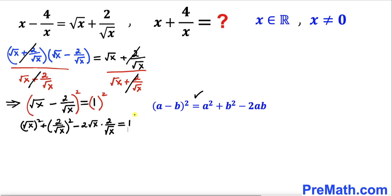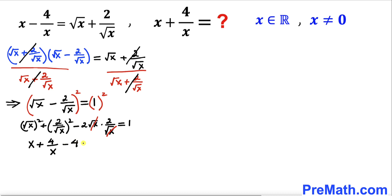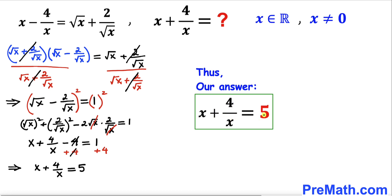The square root of x terms cancel in the cross product. So the left hand side becomes x plus 4/x minus 4 equals 1. Adding 4 to both sides, the minus 4 and plus 4 cancel, and we get x plus 4 divided by x equals 1 plus 4, which is 5. Therefore the value of x plus 4 divided by x is equal to 5. That's our answer — thanks for watching and please don't forget to subscribe to my channel for more exciting videos!